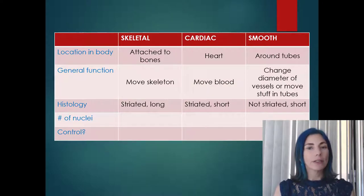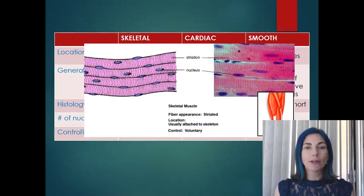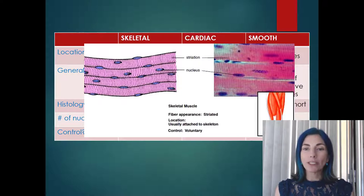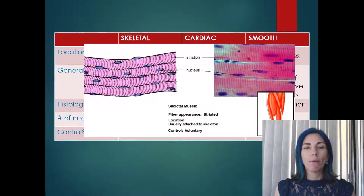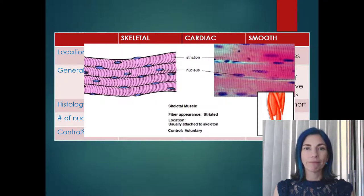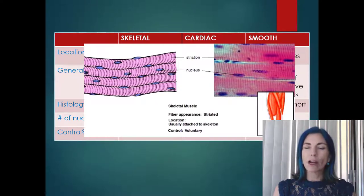Looking at images of each type: skeletal muscle cells are long, and you might notice there is more than one nucleus per cell. You can clearly see the banding pattern, confirming it is striated, long, and multinucleated.